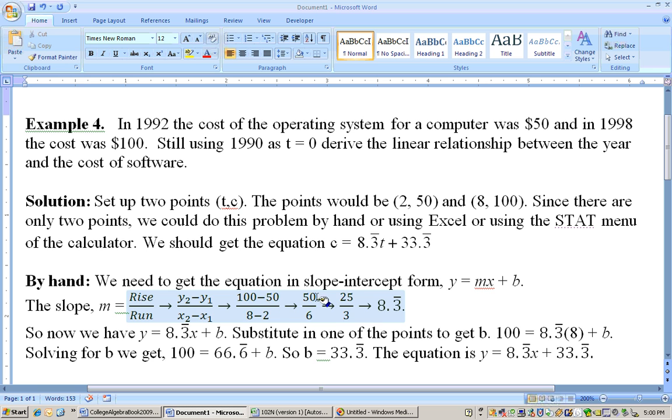If I do some subtraction here, 100 minus 50 is 50, 8 minus 2 is 6, 56 reduces down to 25 thirds, and 25 thirds is the same as 8.3 repeating. And that's what the bar means repeating. So now we got our slope, so I can just substitute in for the m what the slope is, 8.3 bar.